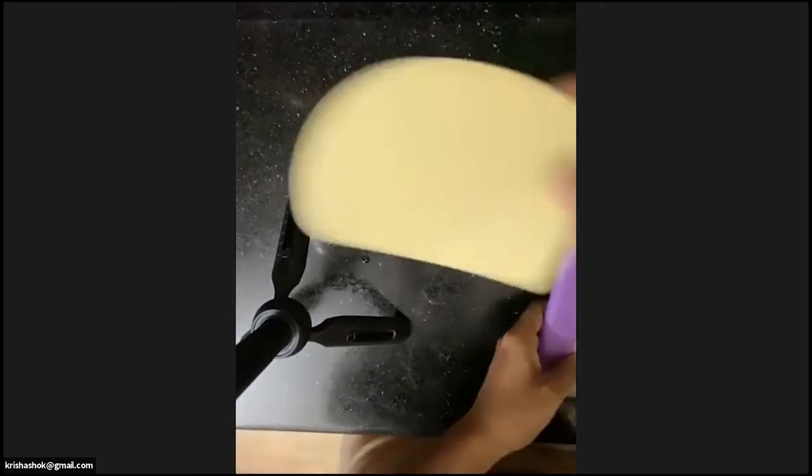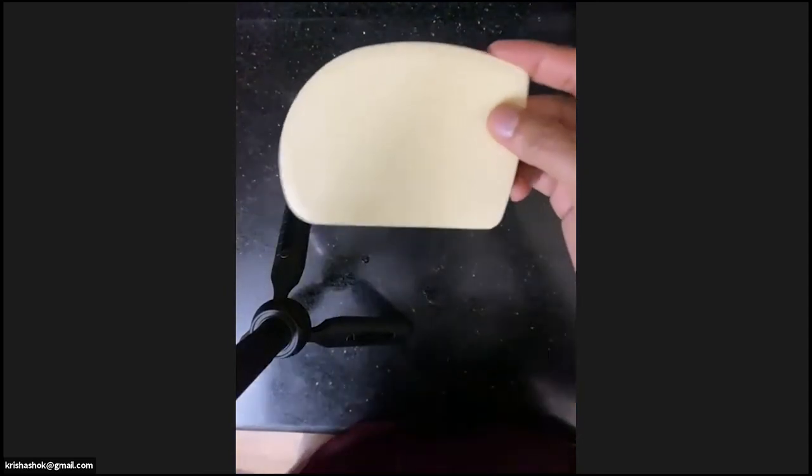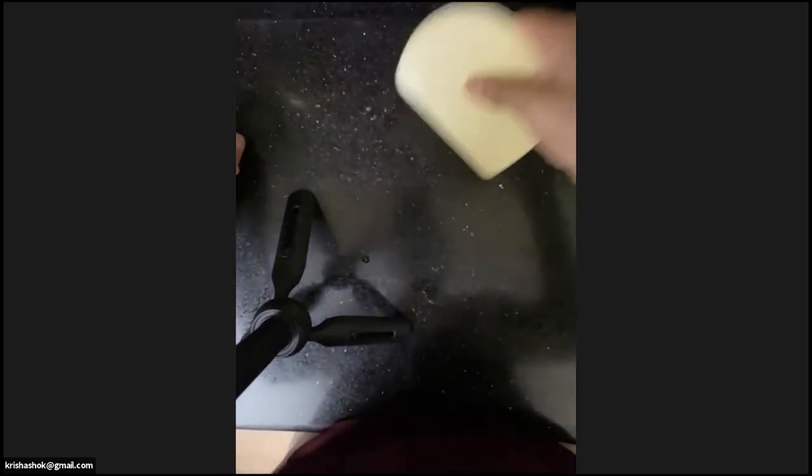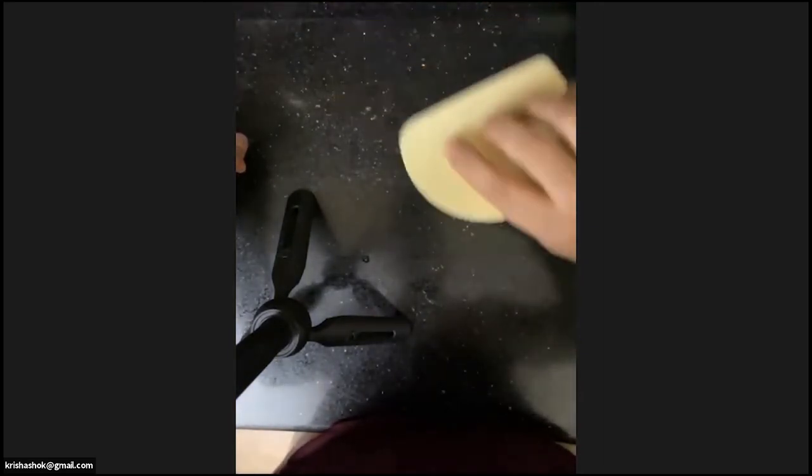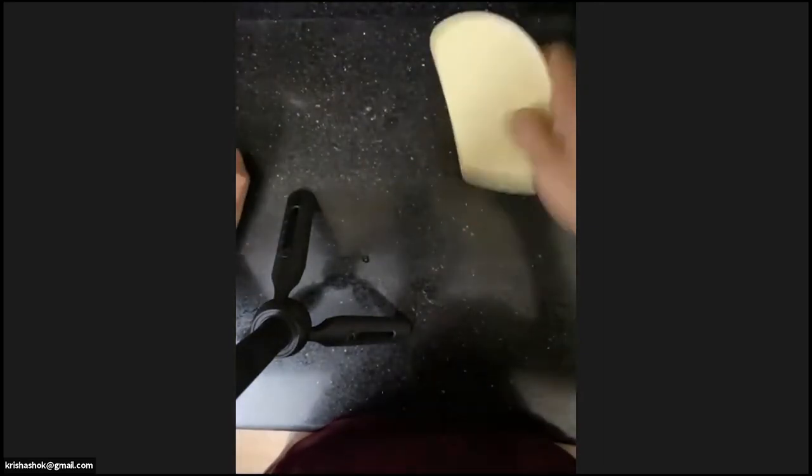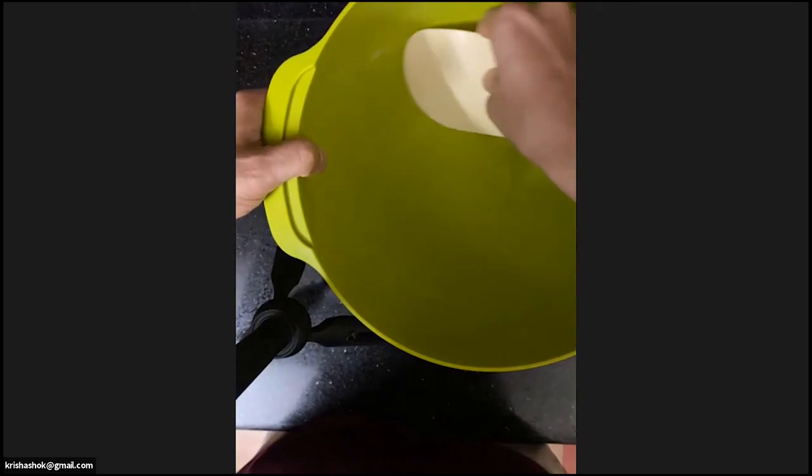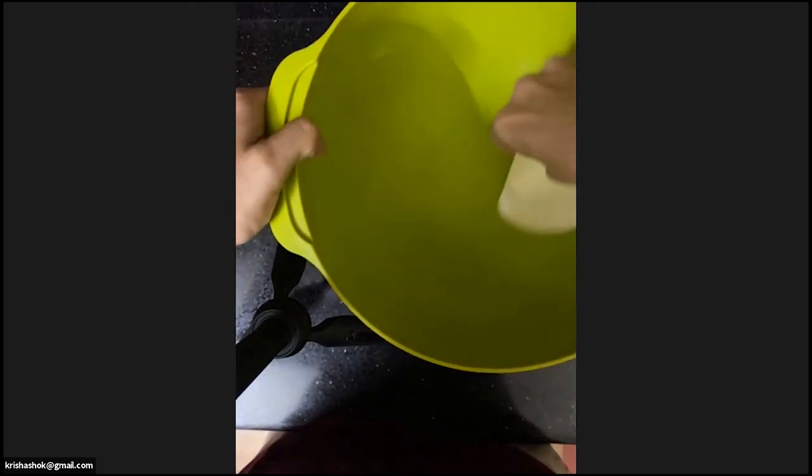The other thing I found tremendously useful is a plastic dough scraper. This allows you to cut the dough and also gather the dough as you're needing it. Things get really sticky, so this is tremendously useful. The other advantage is that because it has a curved edge, it allows me to scrape the dough out of the bowl as well.